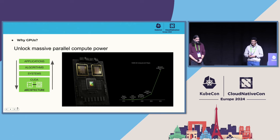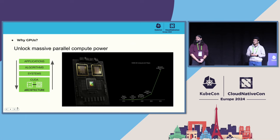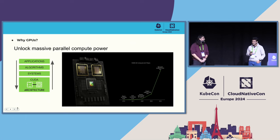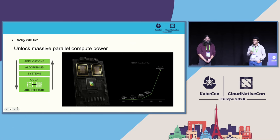Why are GPUs so popular? Given the massive computational power and the giant leap in computational capacity over the last decade, they've become ubiquitous in Kubernetes to run AI/ML jobs, deep learning, and even scientific research. Recently we announced Blackwell, which took a giant leap in terms of computational capability.